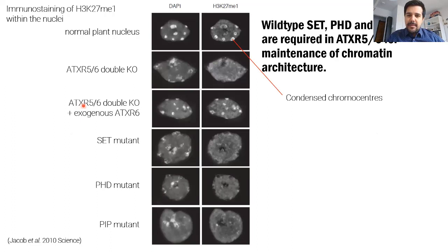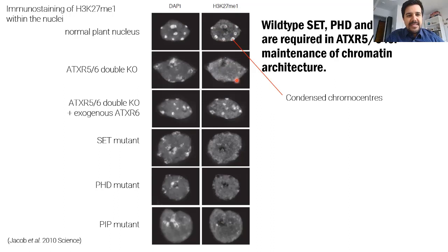When I took over this project, we came across data showing the localization of H3K27 monomethylation visualized by staining of plant nuclei. On the left is DAPI staining showing total DNA. On the right, a probe specific for monomethylated lysine 27 on histone H3. In normal plant nuclei, these repressive marks are found in condensed chromocenters. But if you knock out both ATXR5 and 6, this organization is disrupted and the signal is dispersed. Introducing one of these enzymes back into the cell is sufficient to rescue this phenotype. Mutations in either the SET, PHD, or PIP motif of these enzymes also produce this phenotype.